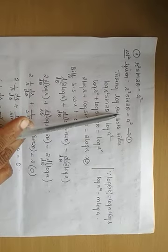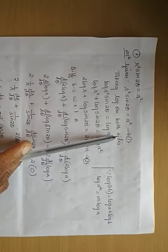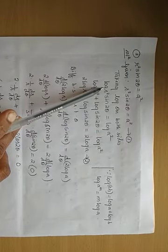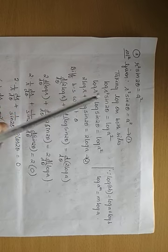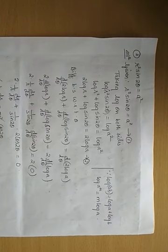The very first step is I will mark it as equation number 1. I will take log on both sides. So when I take log on both sides, this becomes log of r squared sin 2θ equals log a squared.